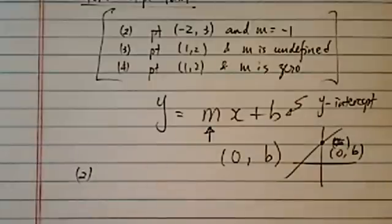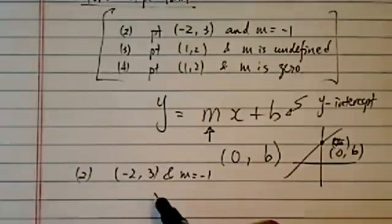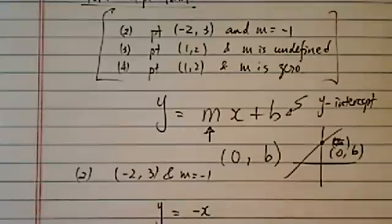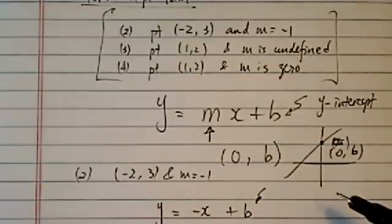Question two says we were given point (-2, 3) and m = -1. Well, let's substitute in there. -1 means -1 times x plus b, and the only variable left to find is b.